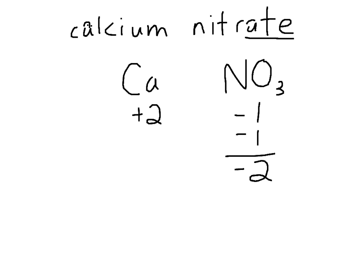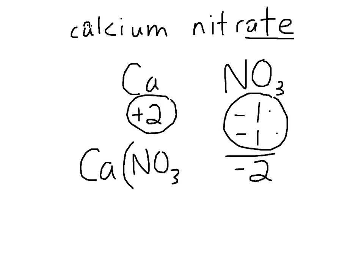So you have a positive 2 and a negative 2. There's one calcium for every two nitrates. So the formula is calcium, and I want to write that there's two nitrates. And how I do that? I put nitrate in brackets, and I put a 2 outside the bracket.